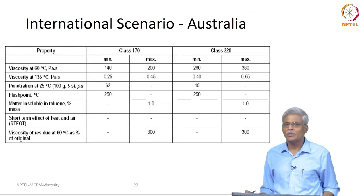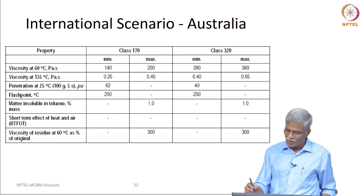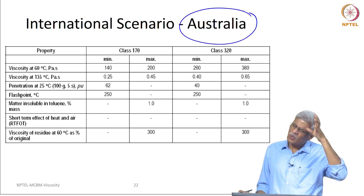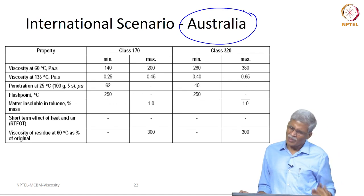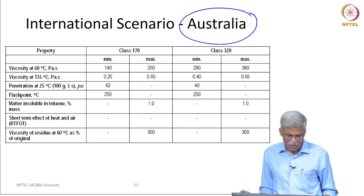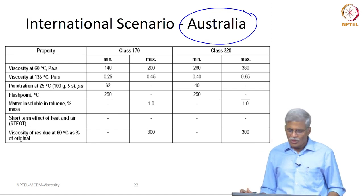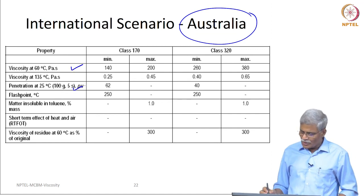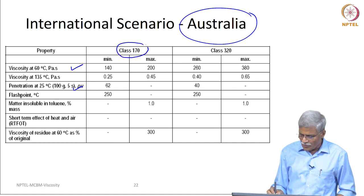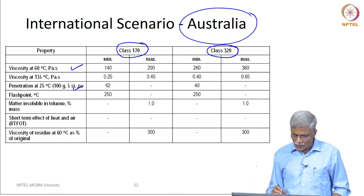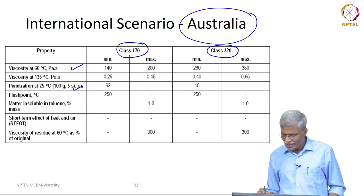The first thing I want to show here is the Australian specification. Some of the climatic zones in Australia are more or less identical to what you see here, and please focus your attention on only these two parameters. There is something called Class 170, there is something called Class 320, and this is written in Pascal seconds.